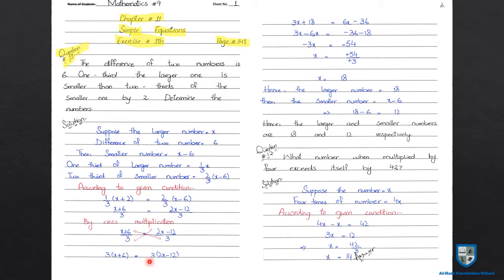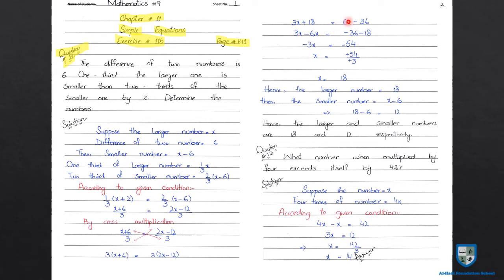Right side पे भी जो 3 है वो bracket के अंदर वाली दोनों terms के साथ multiply होगा। 3 को 2x से multiply करेंगे तो 6x आएगा, minus sign as it is, और 3 को 12 से multiply करेंगे तो 36 होगा। अब next step में unknown quantity वाली terms को separate करना है। Left side पे 3x और right side पे 6x है, तो 6x को left side पे लाएंगे तो 3x minus 6x equal to.